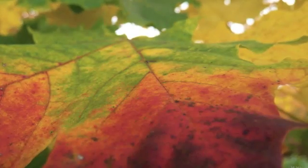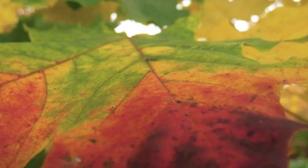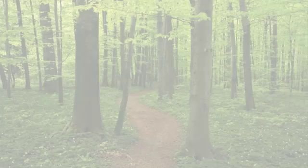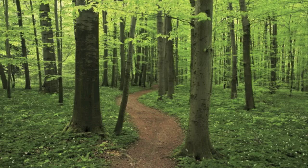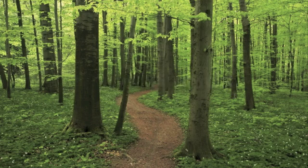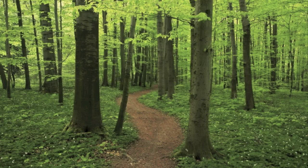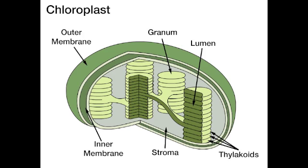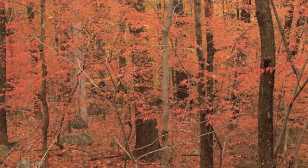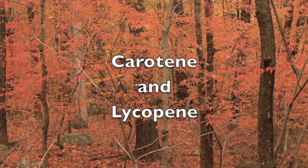The color of the leaf results from pigments produced by the plant. The three main pigment classes are porphyrins, carotenoids, and flavonoids. In the porphyrins class there is chlorophyll, which produces a green color and is found in chloroplasts. In the carotenoids class there are the pigments carotene and lycopene, which can produce yellow, orange,